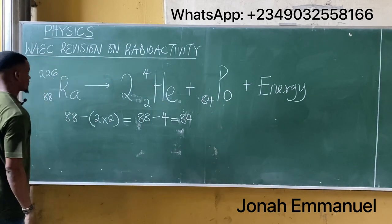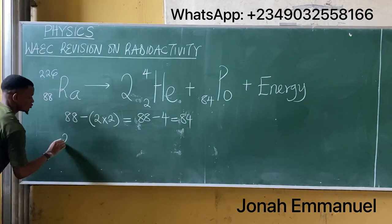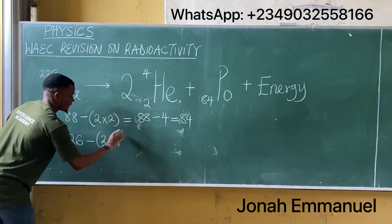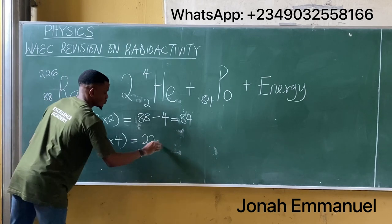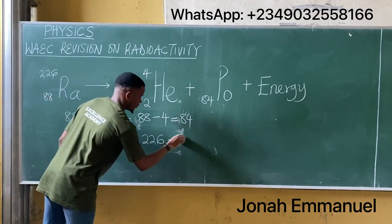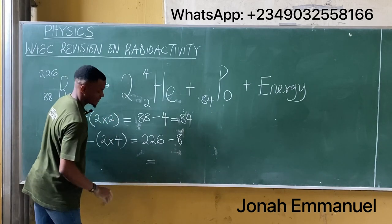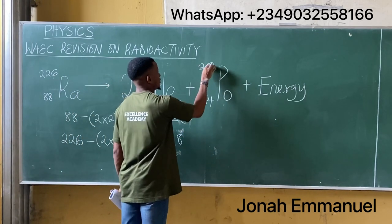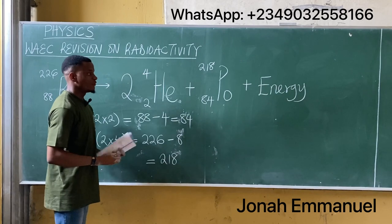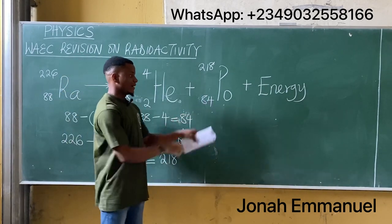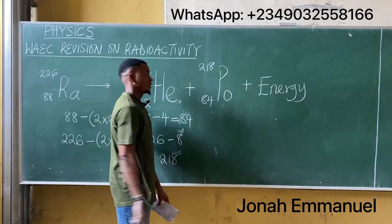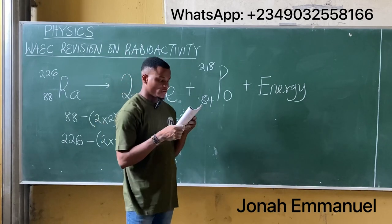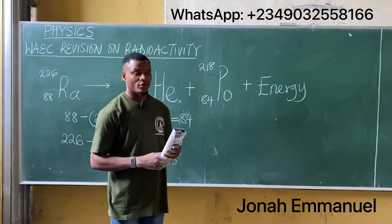For the mass number: we take 226 and subtract 2 times 4, which is 8. That gives us 226 minus 8, equal to 218. So polonium has mass number 218 and atomic number 84. Checking the options, 218 and 84 corresponds to option D. Your answer is option D.